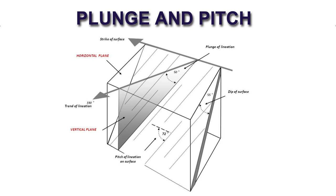like a stretching lineation, an intersection lineation, or a fold axis like a hinge line — for these linear features, if someone asks you what the attitude of this linear feature is, you describe it by the pitch and the plunge. The plunge includes the plunge amount and the plunge direction. Now let's see how we measure the plunge and pitch of a line.